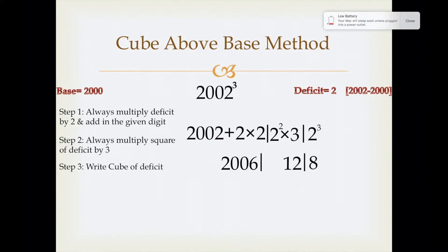Now we can see the base is 2000 here. In this case, we will multiply the first step with 2 square because base is 2000 here, and the second step would be multiplied by 2 because the base is 2000.